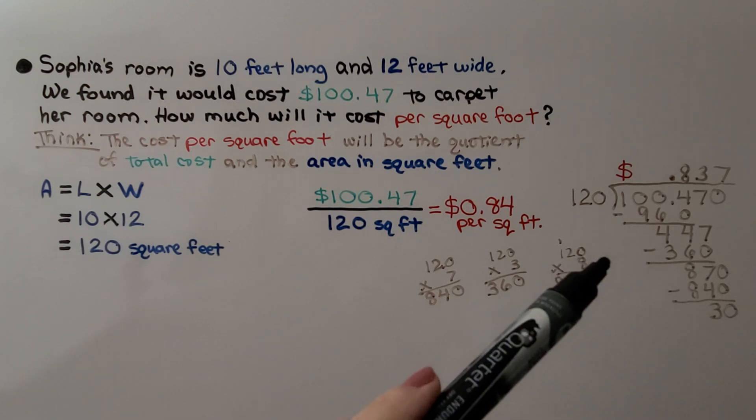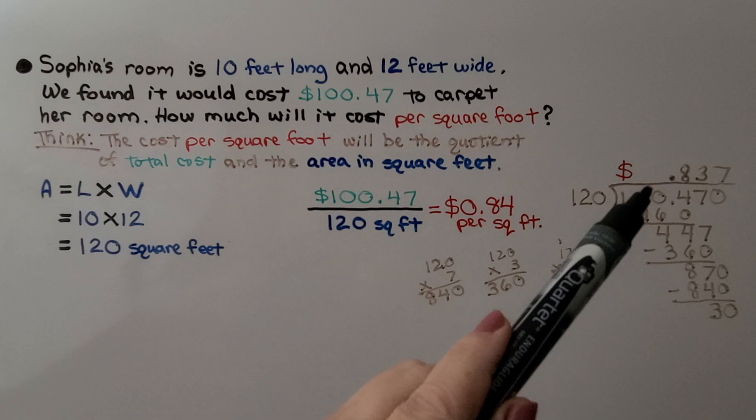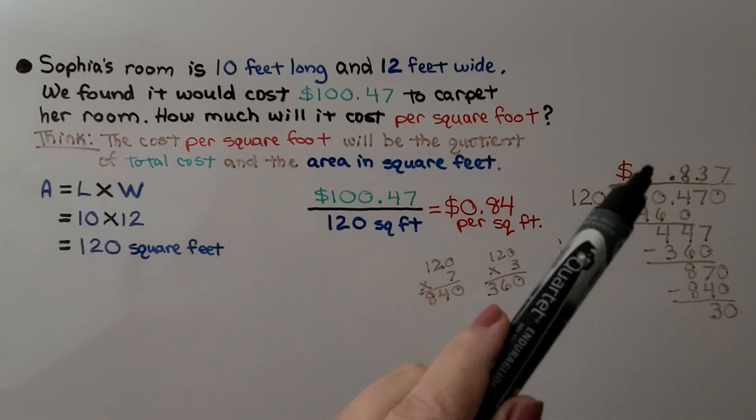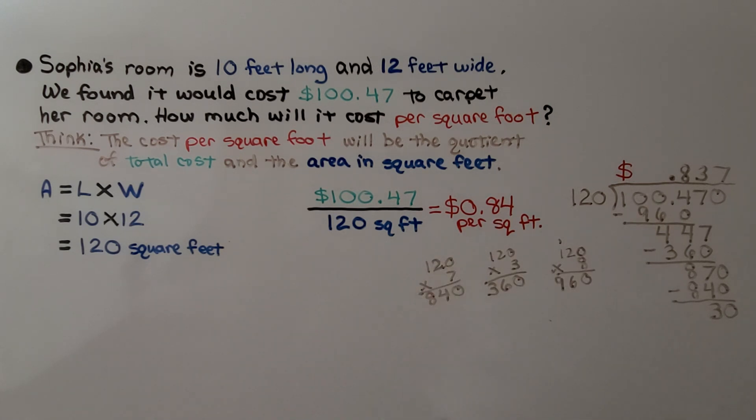Do a little division on the side. And we see that we get 0.837. But because this is money, that 7 is going to tell the 3 to round up to a 4. We're going to get 84 cents per square foot.